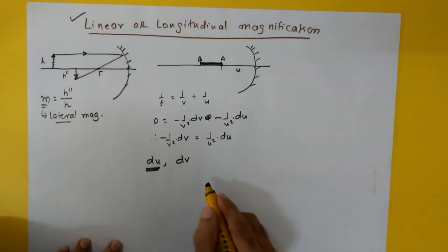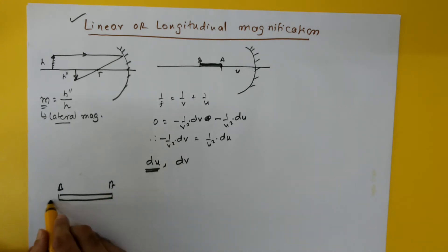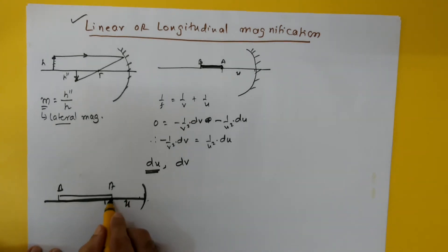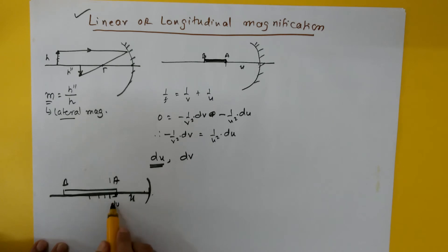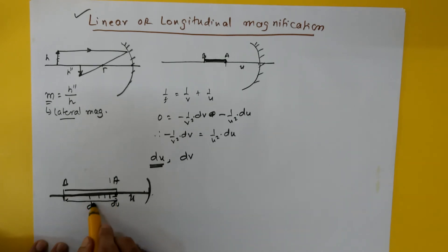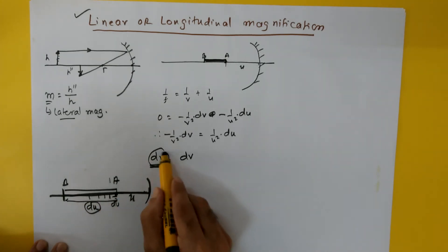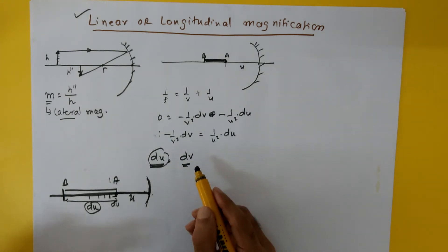It is important to understand what du and dv mean. du is a small change in u — the object distance. If we consider the object AB lying on the principal axis with point A at distance u from the mirror, then du represents the small increase in object distance as we move from point A toward point B. So du basically represents the total length of the object along the principal axis. Similarly, dv represents the small change in the image distance from the mirror.